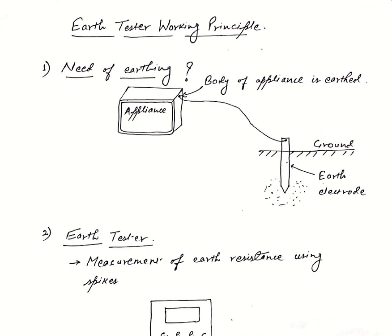It is advised that the body of all electrical appliances should be connected to earthing so that if any fault occurs and any leakage current appears on the body of the appliance, it is directed towards the ground through earth without causing any harm to any person.